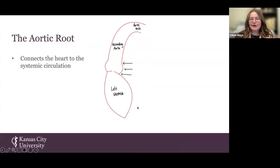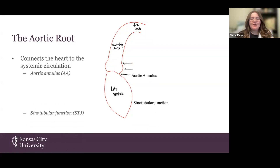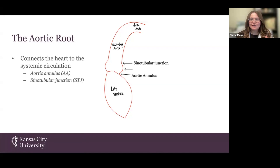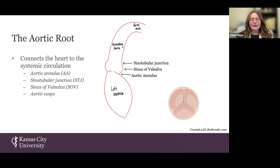The aortic root is an amalgamation of structures in the proximal ascending aorta that connects the heart to the rest of the systemic circulation. Among these structures are the aortic annulus, which anchors your aortic valve; the sinotubular junction, which is this ridge here that separates the aortic root from the rest of the aorta; and the sinus of Valsalva, which is this large pocket here that's home to your individual aortic sinuses, your aortic cusps, which make up your aortic valve, and your aortic commissures, which separate your aortic cusps.